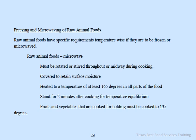Freezing and microwaving raw animal food: raw animal foods that are microwaved must be rotated or stirred throughout or midway during cooking, covered to retain surface moisture, heated to at least 165 degrees in all parts of the food, and allowed to stand for two minutes after cooking for temperature equilibrium. Fruits and vegetables cooked for holding must be cooked to 135 degrees.